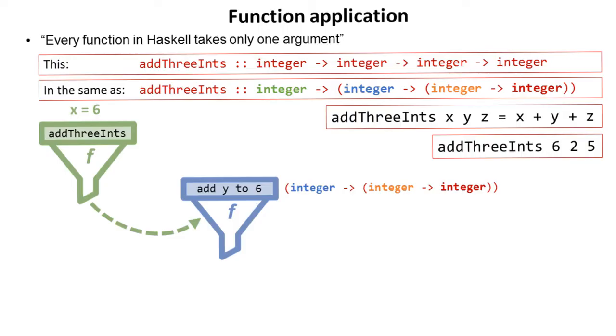What actually comes out of this function, its result, is a brand new function, and here it is. It's basically what's left. This function takes in one argument which is y and it adds it to the result which has come out from the previous function. So this is a new function called add y to six. That function now runs.